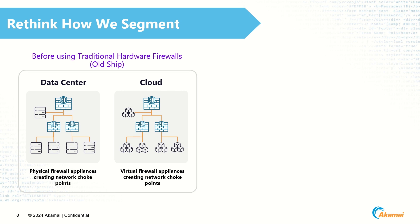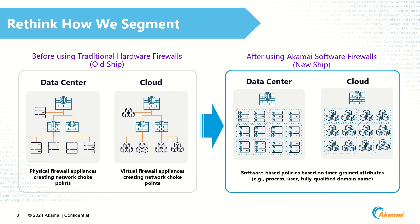Using the shipbuilding example, we need to rethink how we segment. Before, or the old ship, using traditional hardware firewalls, security was tied to specific environments and networks. Security policies were slow and difficult to manage, and policies were network-centric instead of object-centric. After, or the new ship, using Akamai GuardiCore segmentation, we leverage a distributed software-based approach — one set of security policies that work everywhere, and it's easy to visualize and make changes.